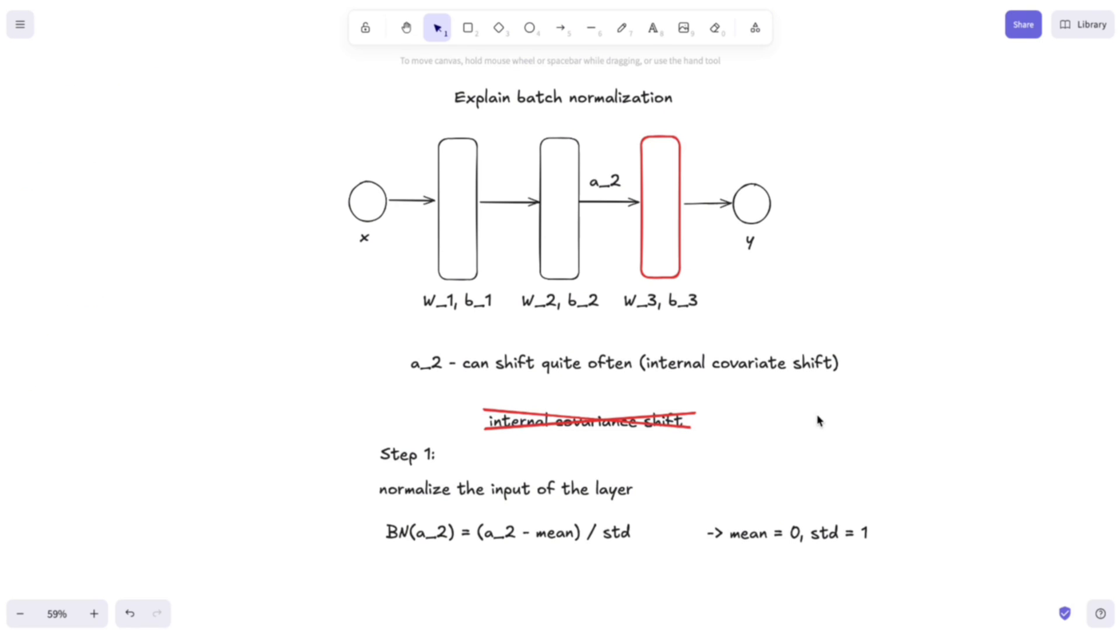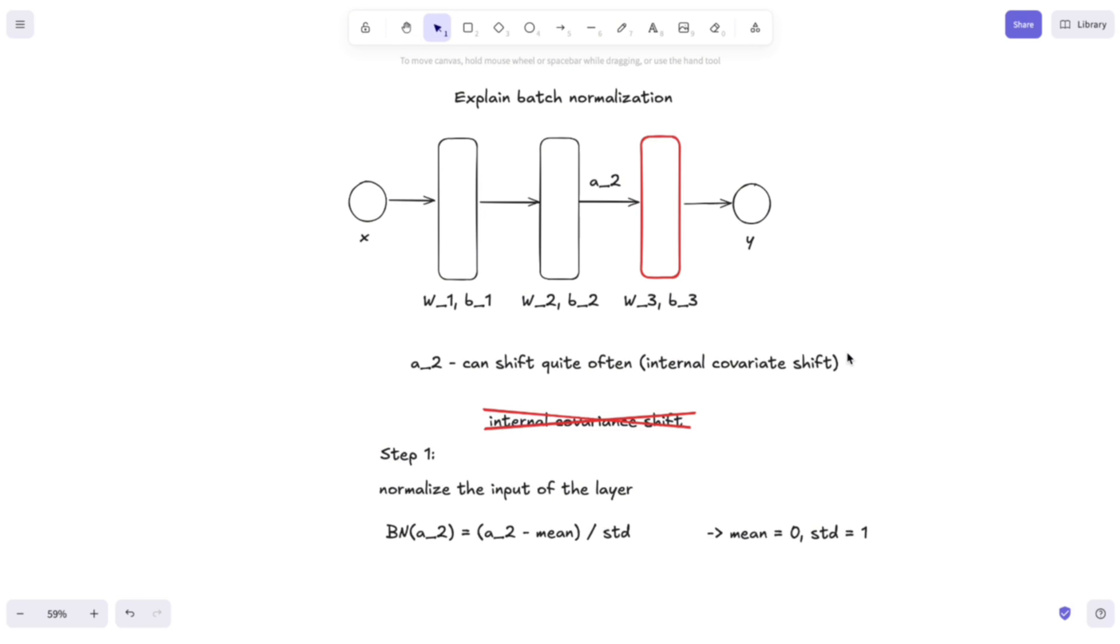However, we usually don't want all our input layers to have a mean of 0 and a standard deviation of 1, but instead, we want them to have their own mean and standard deviation. We just want them to not shift when we train the neural network.